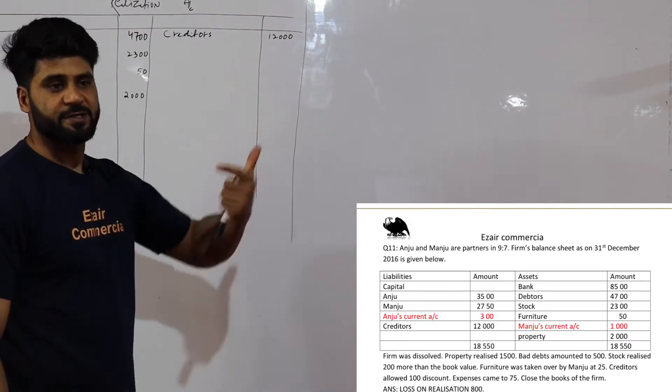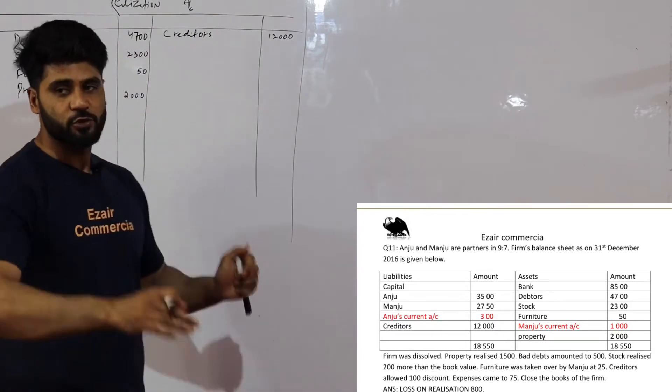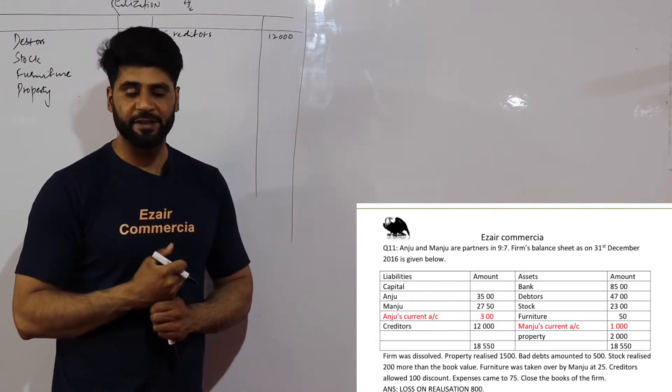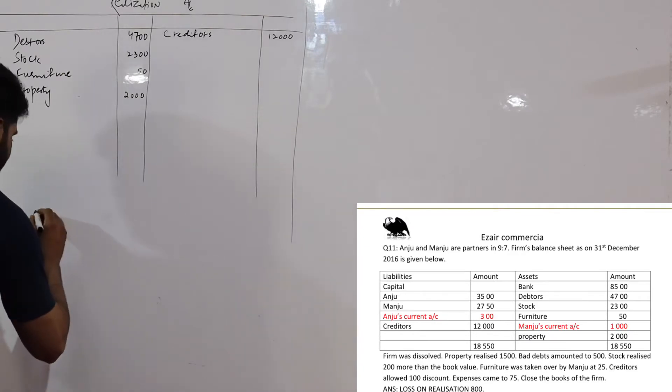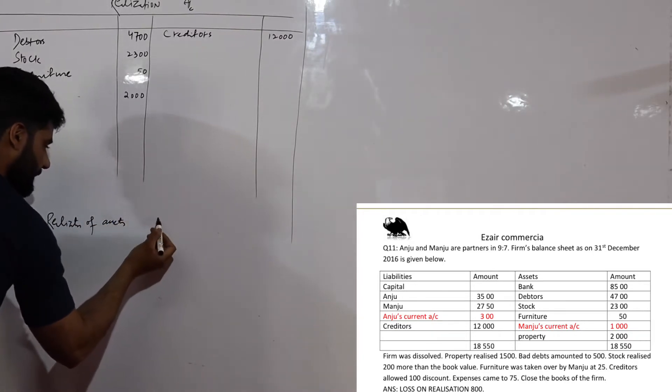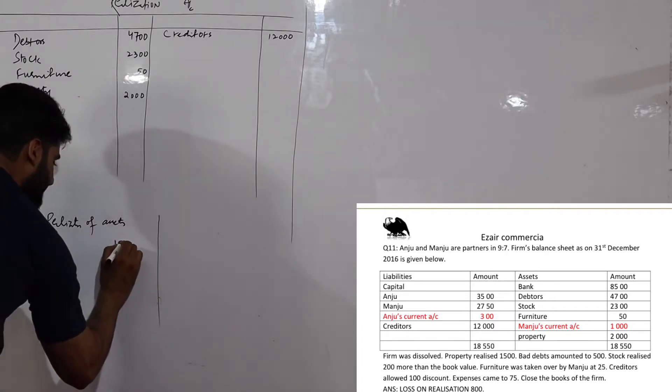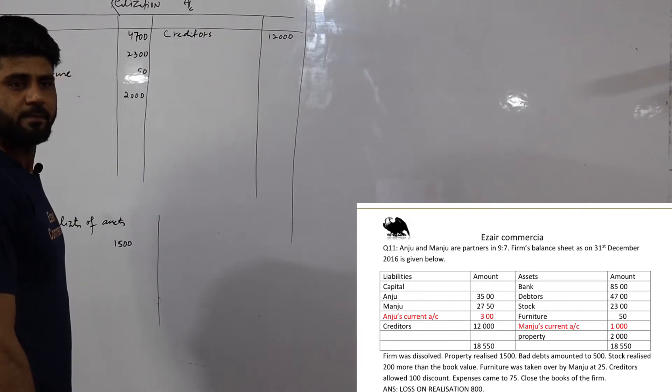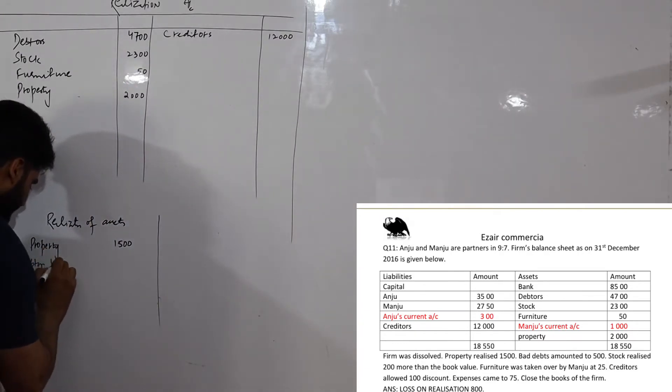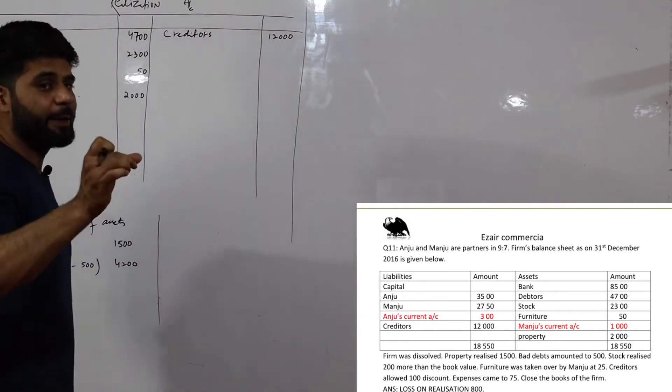Sale of asset is shown on credit side. If we look at the question, the firm was dissolved. Property realized 1500. Bad debts are 500. It means debtors don't give us 500. Stock realized 2300 less than 200 equals 2500. Book value is more than 200. And furniture, Minju has at 25. Now let's see, here I will write you realization of assets. So first of all, property is 1500. And after that, bad debt is 500. It means that this debtor was 4700. They did not give us 500, so they gave us 4200. Bad debt is what happens? The amount of money which can't be recovered from sundry debtors.